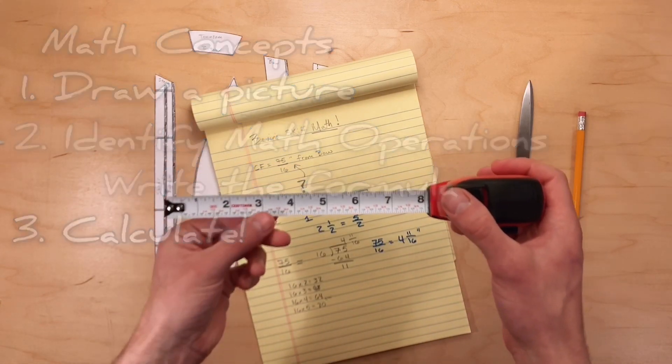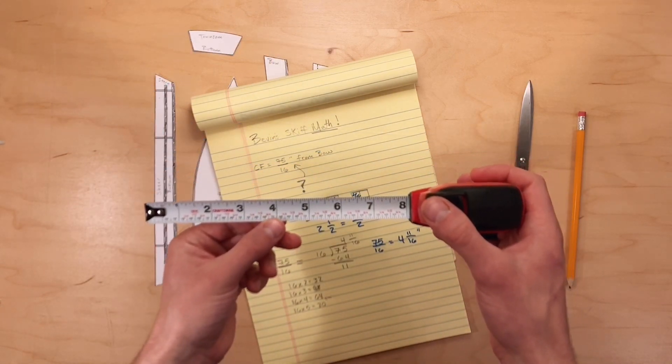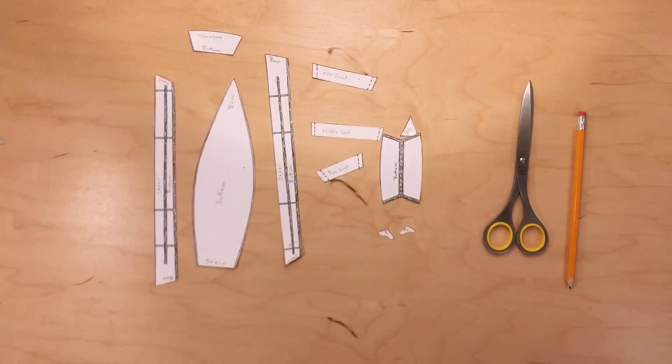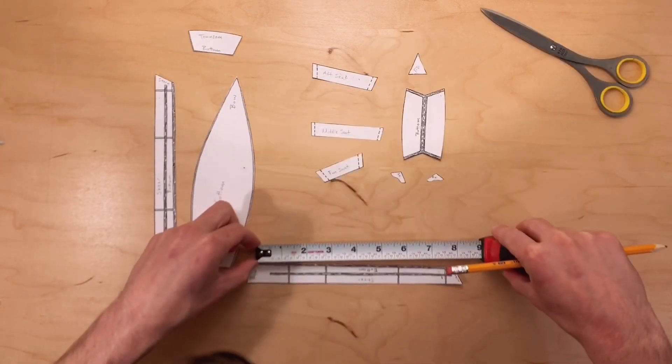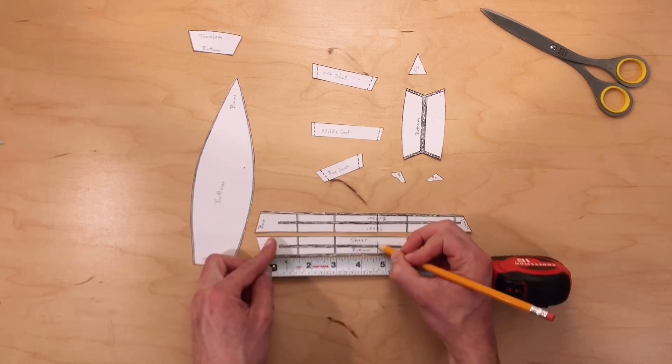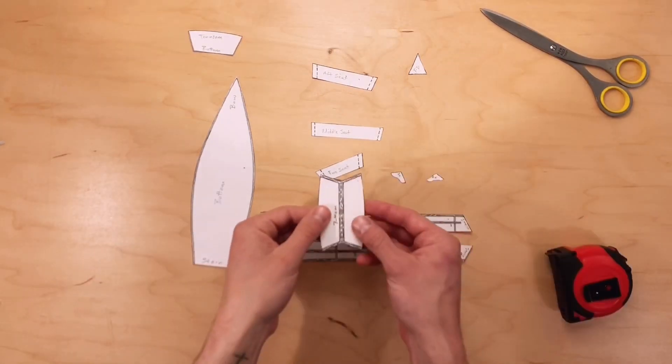I've finished this calculation and can see that 75 sixteenths is equal to 4 and 11 sixteenths which is much easier to see on my tape measure. Once I've finished this calculation, I'm able to measure from the bow along the bottom edge of my side pieces to mark where the center frame should go.